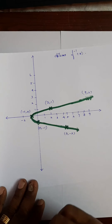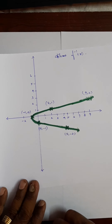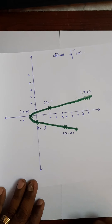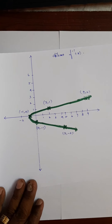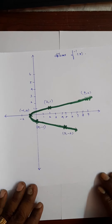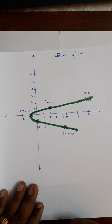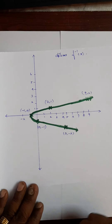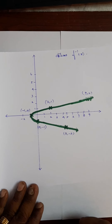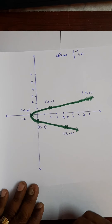So the inverse points are: (0, -1) becomes (-1, 0); (1, 2) becomes (2, 1); (0, -1) becomes (-1, 0); (-2, 5) becomes (5, -2); (2, 9) becomes (9, 2).